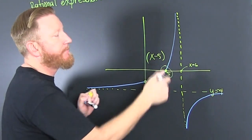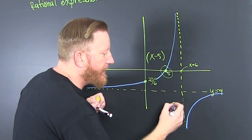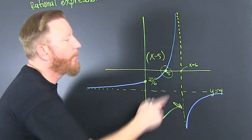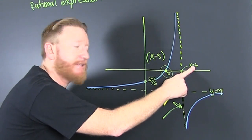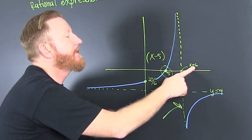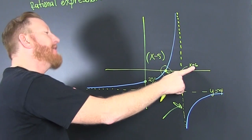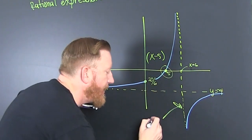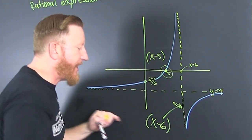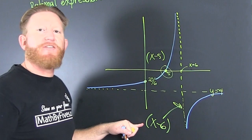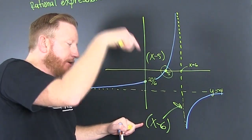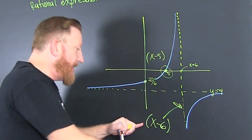This asymptote here — that is x equals 6. And that means that x minus 6 is a factor. But from where? From the denominator, because you've got that vertical asymptote.